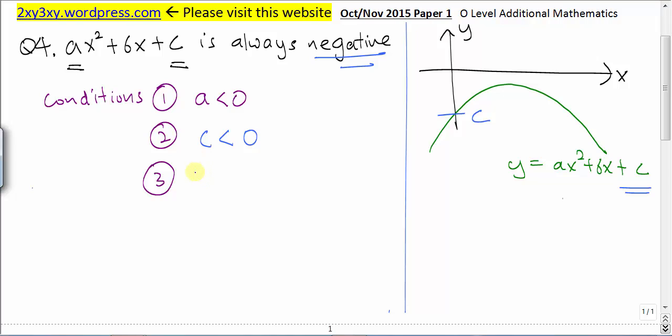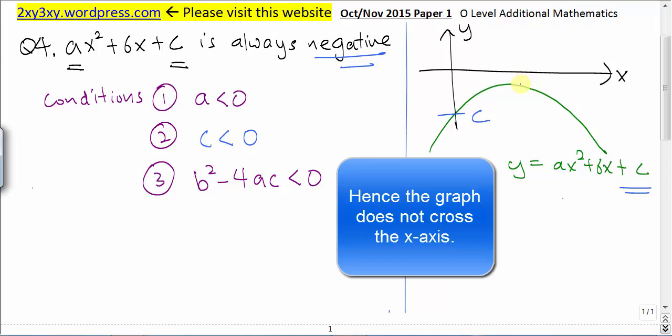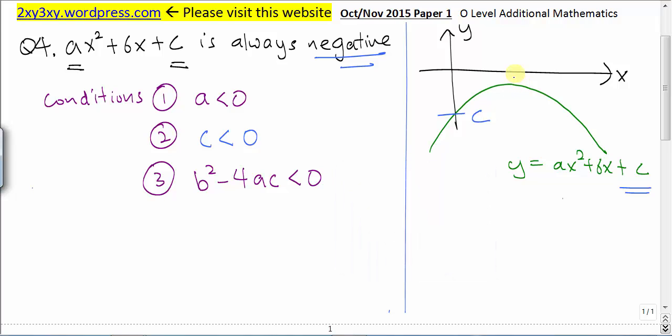The last condition is the discriminant b² minus 4ac must be less than zero because the graph is below the x-axis. And again, the graph is below the x-axis because we want the y value of the graph to be always negative.